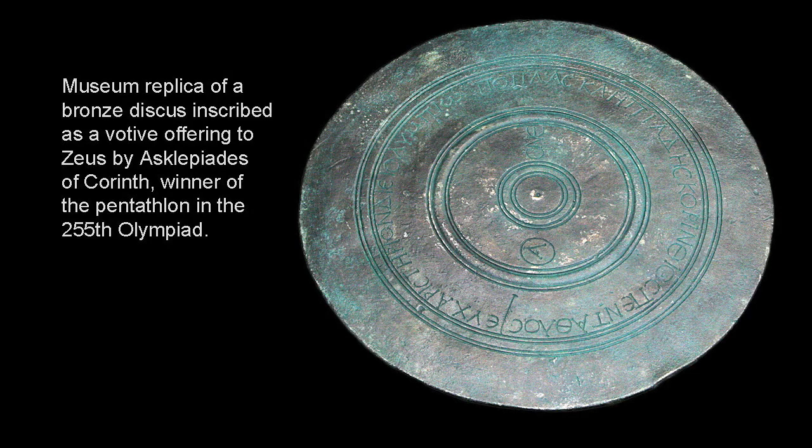The discus throw was among the earliest of competitive sports, with records of it going back to the 8th century BC. It was one of the events included in the ancient pentathlon, along with the stadium, the javelin throw, the long jump and wrestling, held for the first time in the 18th Olympic Games of 708 BC. The object was to hurl a solid bronze disc weighing about 4kg as far as possible, the longest of 5 attempts being taken for each athlete.